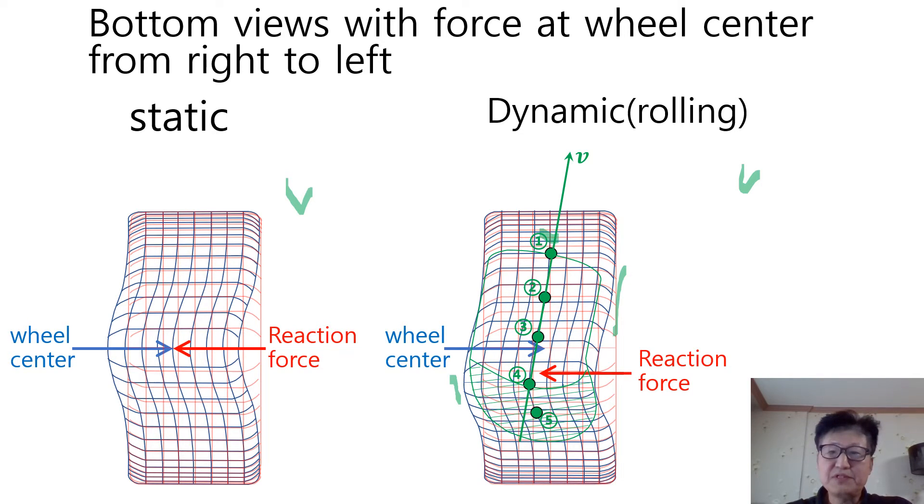The same point changes to number 2 location, then number 3 location, then number 4 location. The tire cannot endure big deformation from number 4. And the side slip happens thereafter in this area.